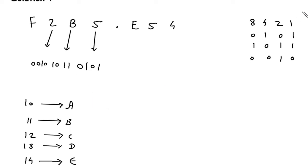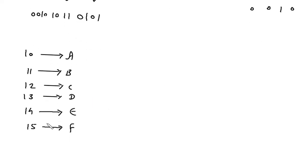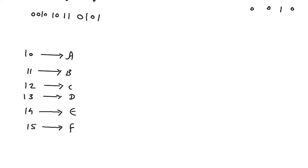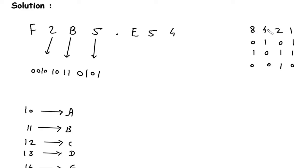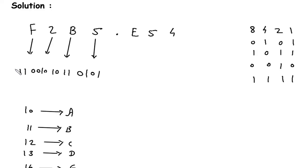Then F. F means 15. So 15 means 8 plus 4 plus 2 plus 1, which gives 14 plus 1 = 15. So this will be 1, 1, 1, 1. The binary for F is 1111.